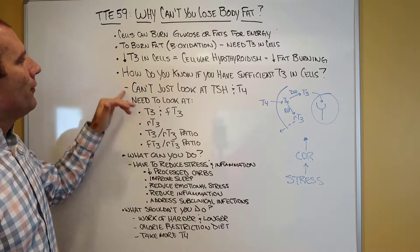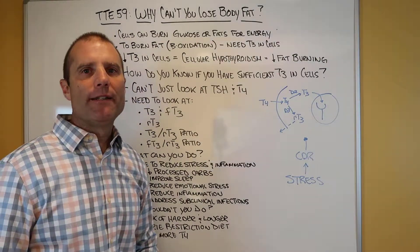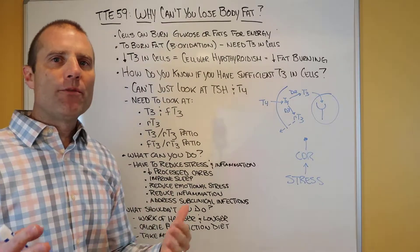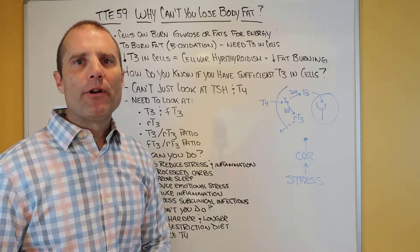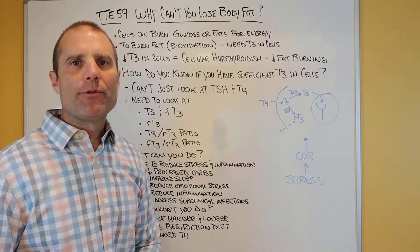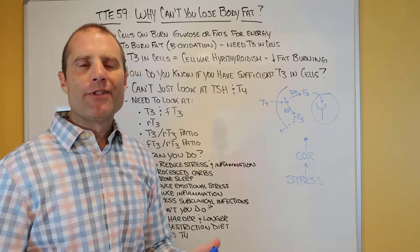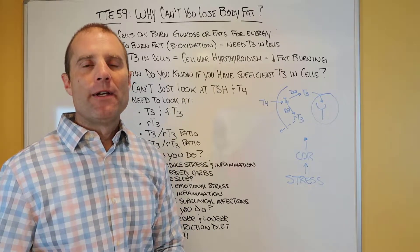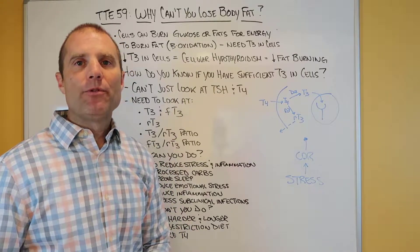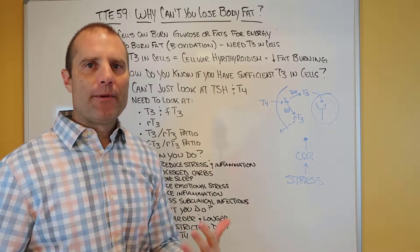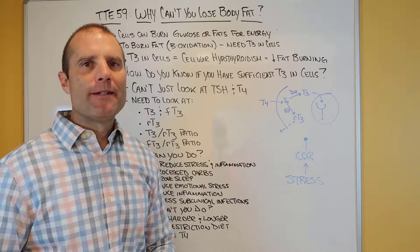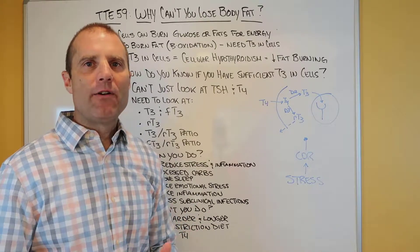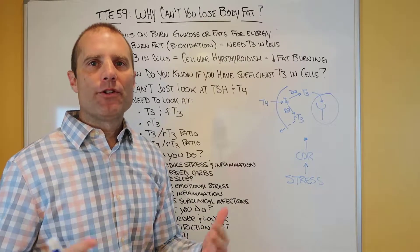So how do you know if you have sufficient levels of T3 inside the cells? You can't just look at TSH and T4. Conventional medicine uses just those two markers primarily when evaluating thyroid status. But as I've talked about on multiple videos, TSH and T4 are not great indicators of what's happening at the peripheral cells. They're good for understanding what's happening at the pituitary gland, but not for figuring out what's happening at the peripheral cells, because thyroid physiology isn't a static mechanism — it's variable from cell to cell, tissue to tissue, depending on the stress on the system.